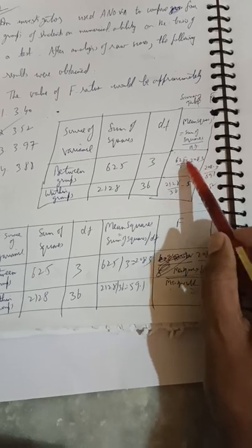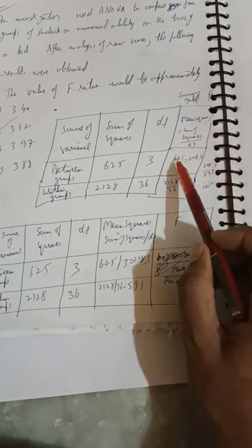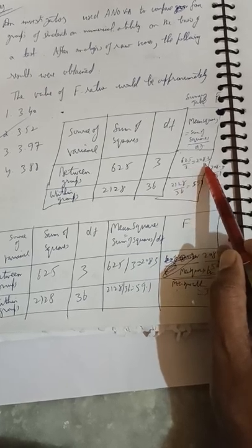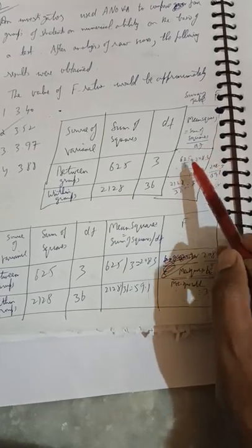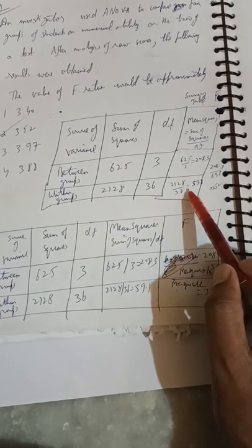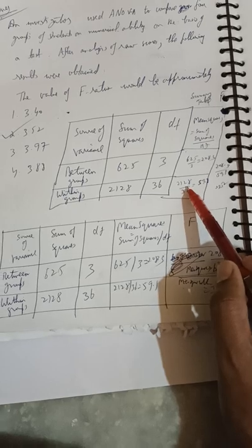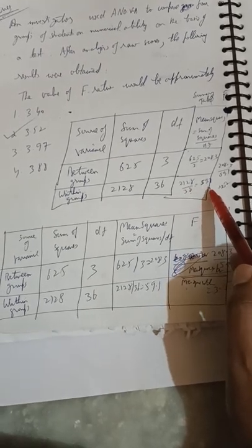Mean sum of squares = sum of squares / degrees of freedom. Mean sum of squares between groups = 625 / 3 = 208.3. Mean sum of squares within groups = 2128 / 32 = 59.1.